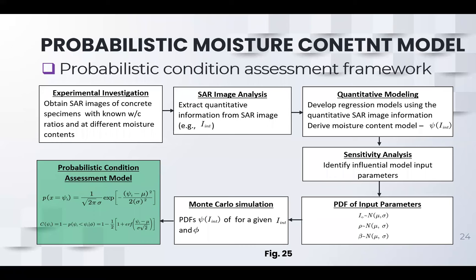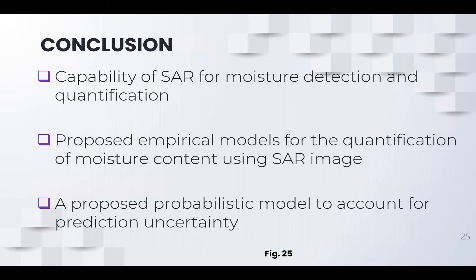The proposed framework involves: developing SAR images with known water-cement ratios, performing SAR analysis to extract quantitative information — specifically the integrated SAR amplitude — then doing quantitative modeling, performing a sensitivity analysis to identify influential model parameters, introducing uncertainty in the model parameters to build PDFs through Monte Carlo simulation, constructing the condition index, and using known moisture thresholds for various deteriorations to determine the probability that a given measurement corresponds to a specific moisture condition.